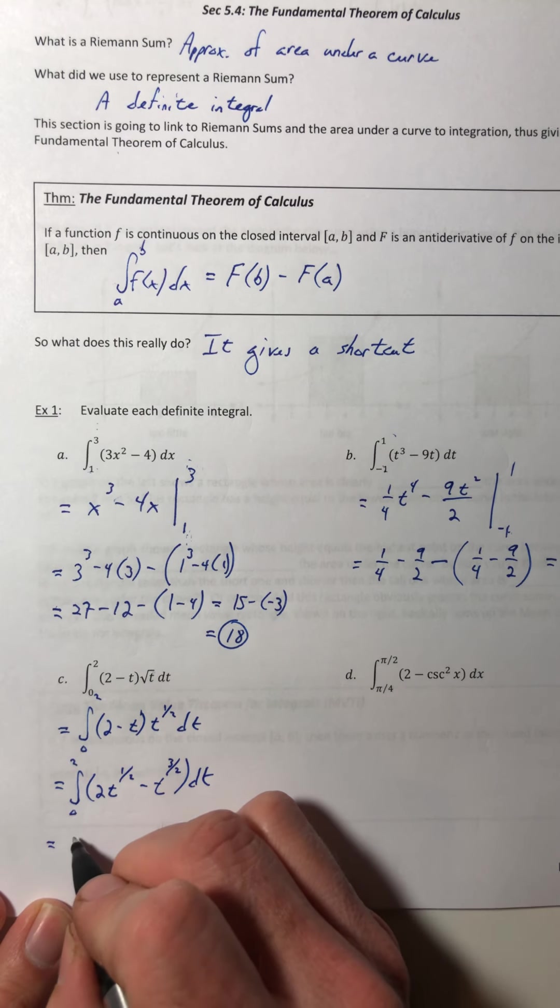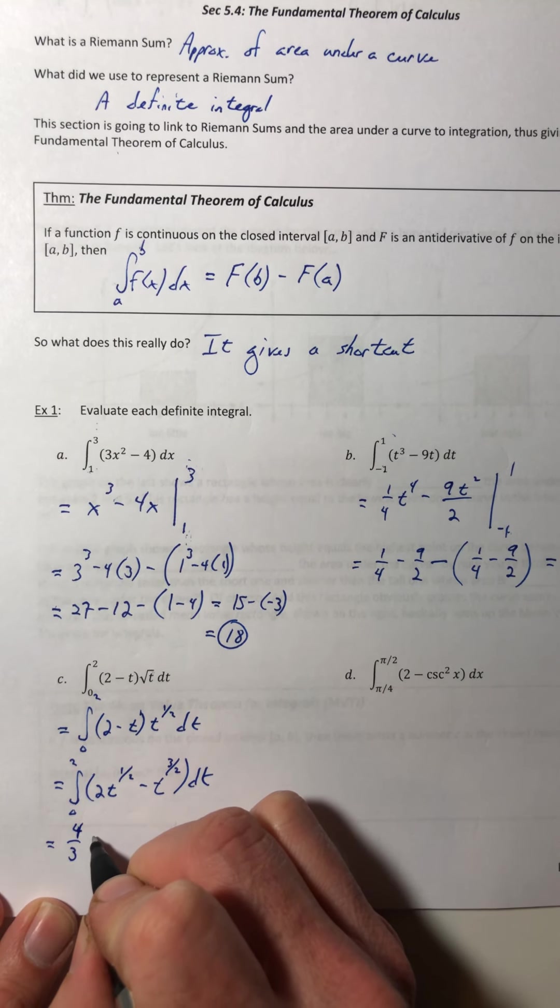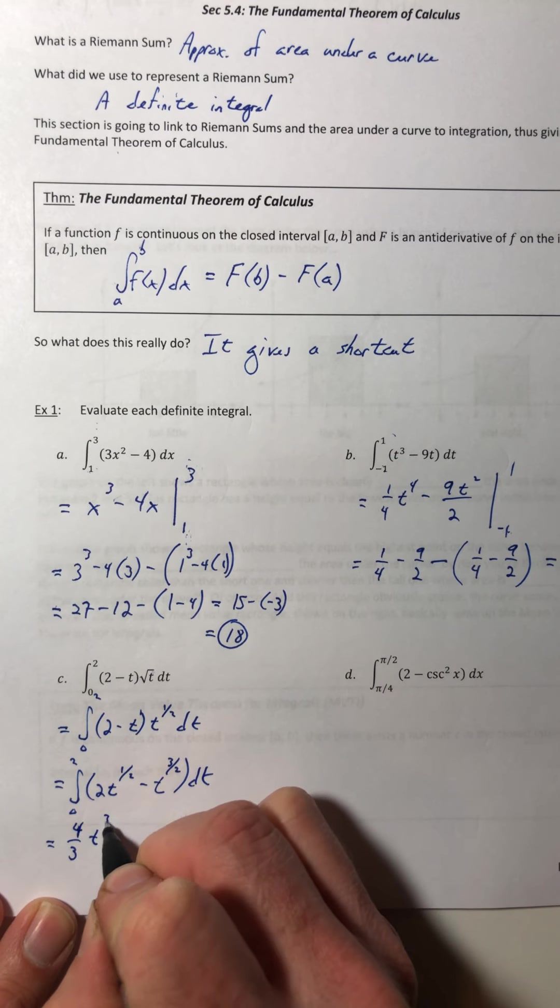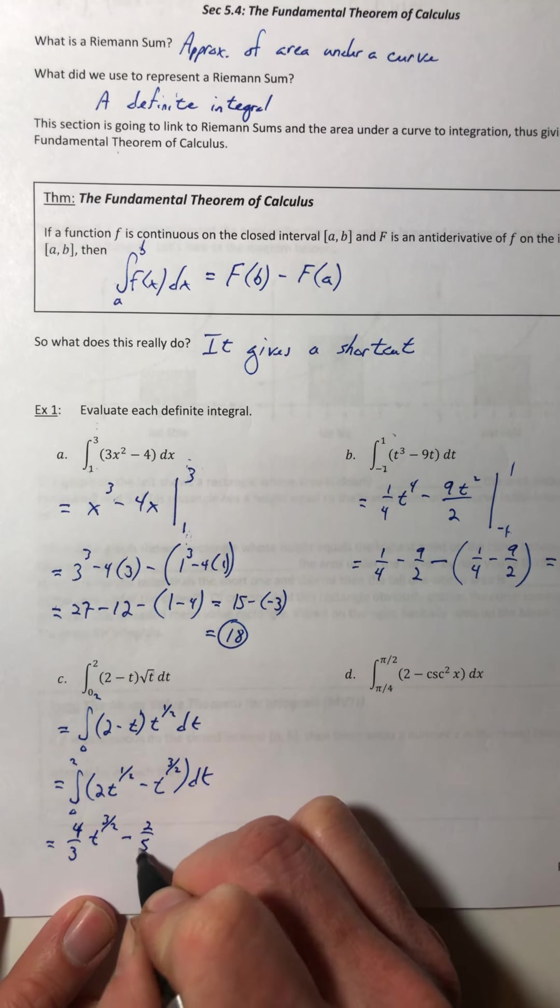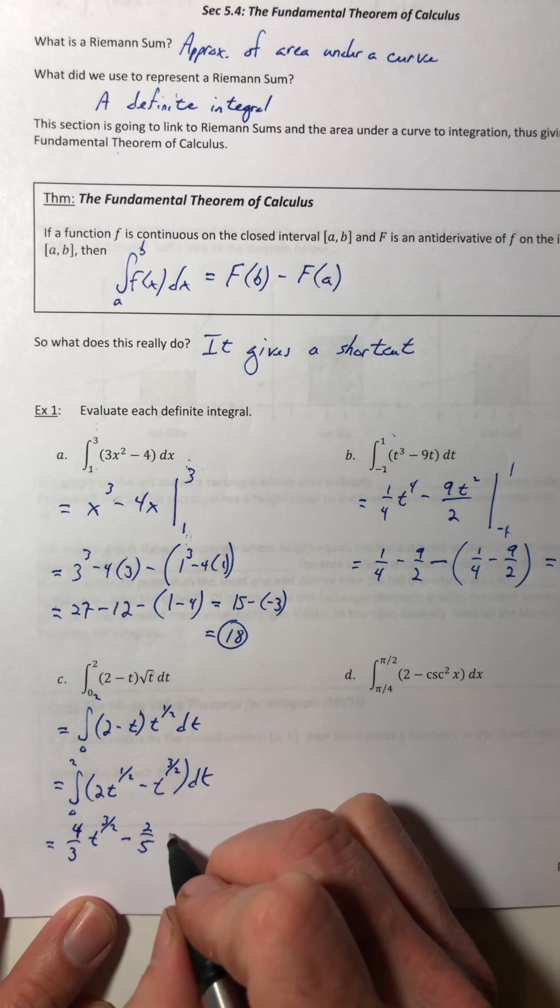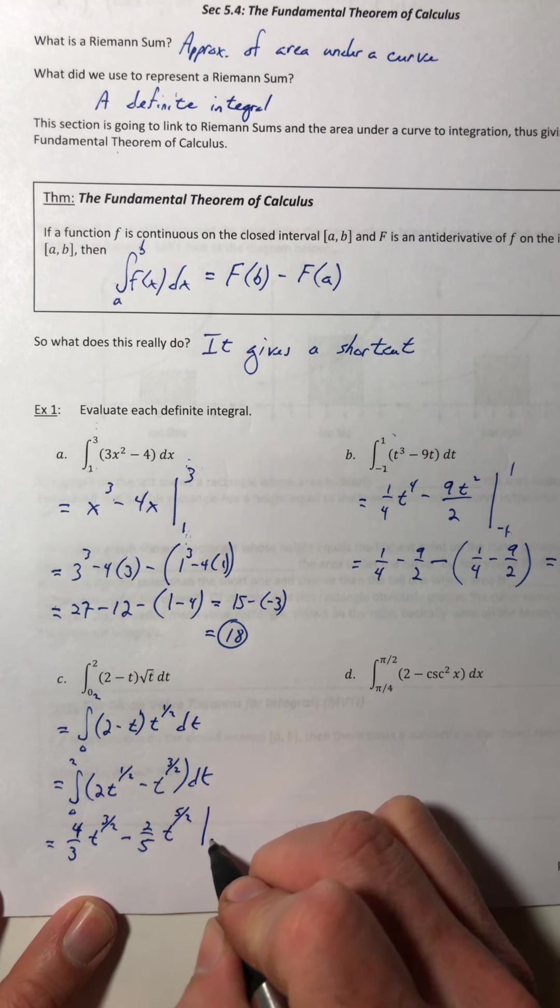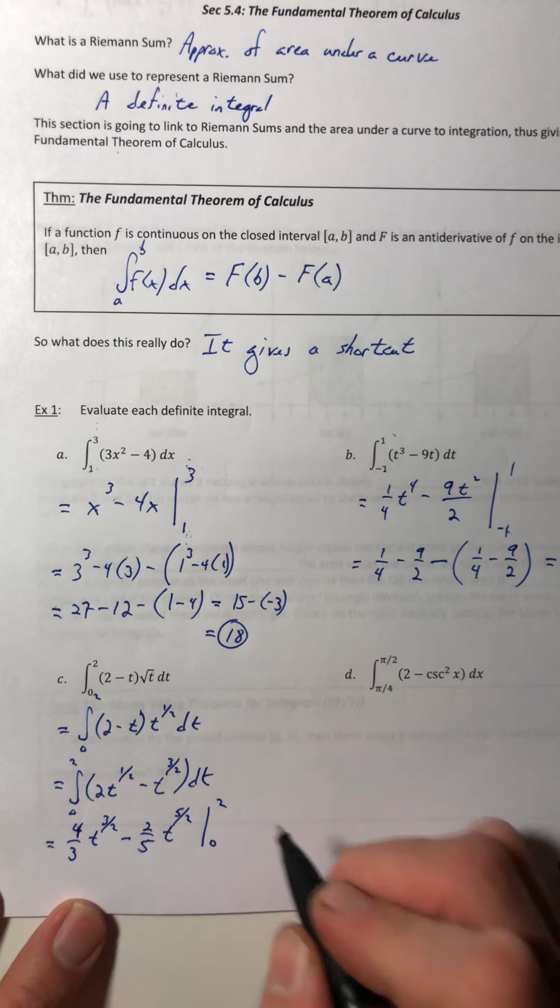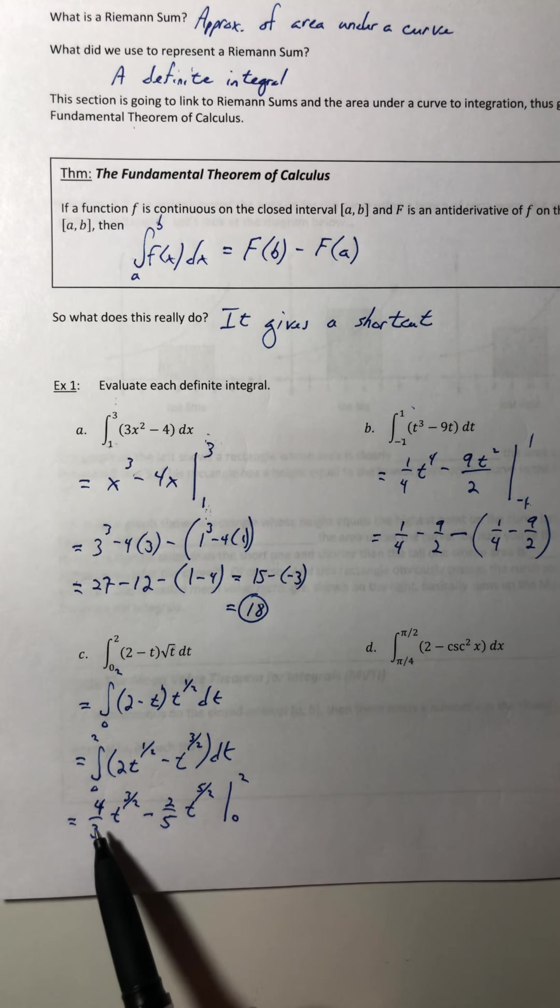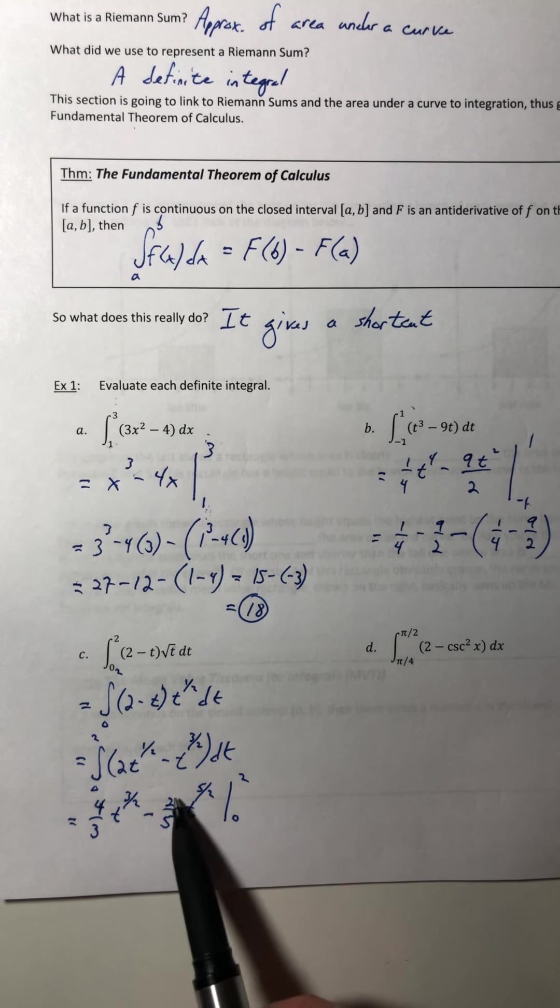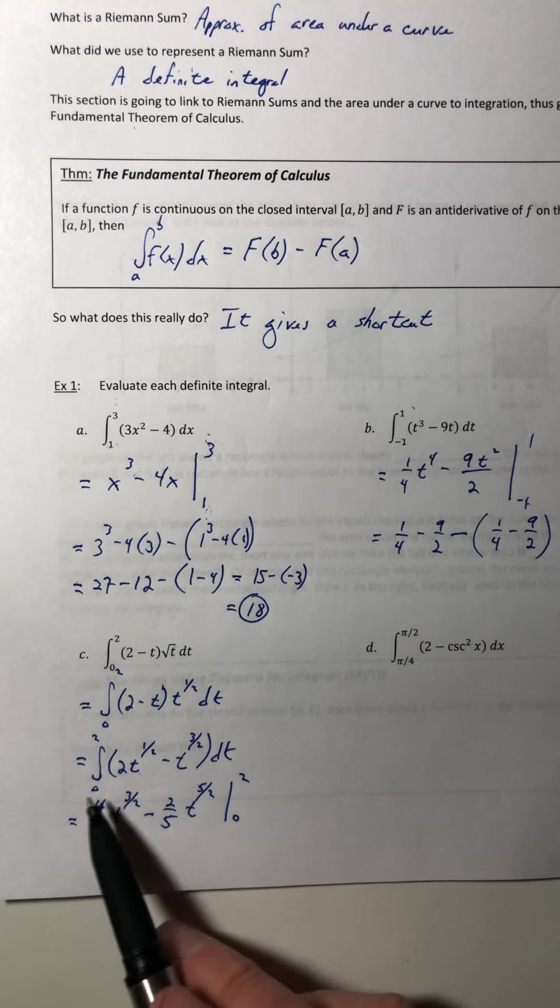So if I do, we're going to end up with 4/3 t^(3/2) minus 2/5 times t^(5/2). And we're integrating from 0 to 2. And if you ever want to know, did I integrate that right? Find the derivative and see if it gets back to where you started. In this case, it does.